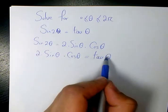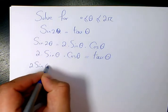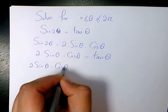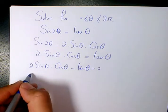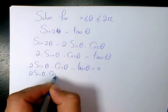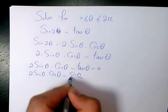Now I need to move tan to the left hand side. So we have 2sin(θ)cos(θ) - tan(θ) = 0. And 2sin(θ)cos(θ), you know tan is sin(θ) over cos(θ).